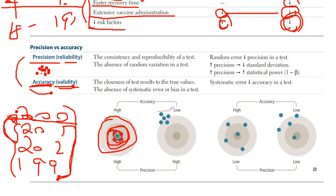In this example, notice how all the points are very close to each other — so it is highly reliable. However, these points are actually very far from the center. For instance, the standard test says 200, but they might get 150, 151, 152 — quite far from the standard of 200. So it is highly precise but not highly accurate.